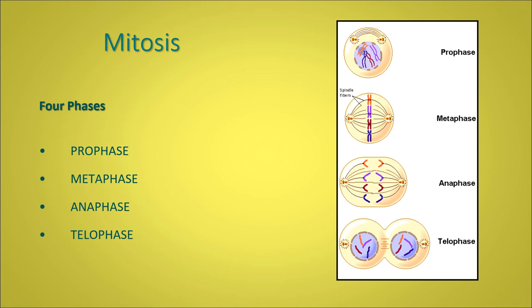Mitosis is made up of four phases and it's during these four phases, as you can see in this picture, you can see this cell division. The first phase is the prophase. If you think of any prologue, it's always the beginning of a book. So prophase is the beginning phase. Second phase is metaphase. The third phase is anaphase. And the fourth phase is telophase.